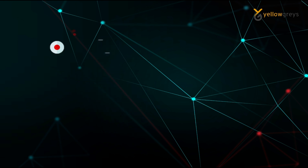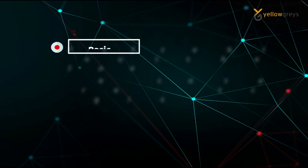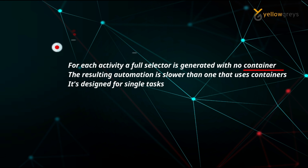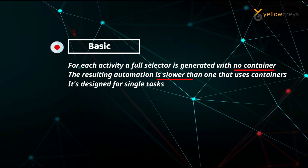Basic Recording: For each activity, a full selector is generated with no container. The resulting automation is slower than one that uses containers, and is designed for a single task. In the following practical demo, I will explain what a selector and container are.